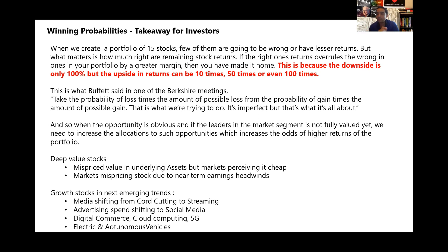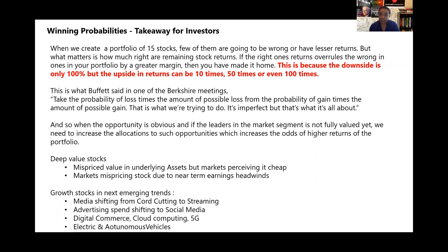The key insight — what I've marked in red — is this: if you invest in one stock, the downside is only 100%, meaning it can go to zero, but the upside in returns could be 10 times, 50 times, or even 100 times. So it is not a symmetrical bet in terms of loss versus gain. The probability is: when you find such opportunities you have to increase your allocation accordingly, and prune the ones where you are making losses or have made mistakes. That is the way to increase your probability of achieving higher returns.